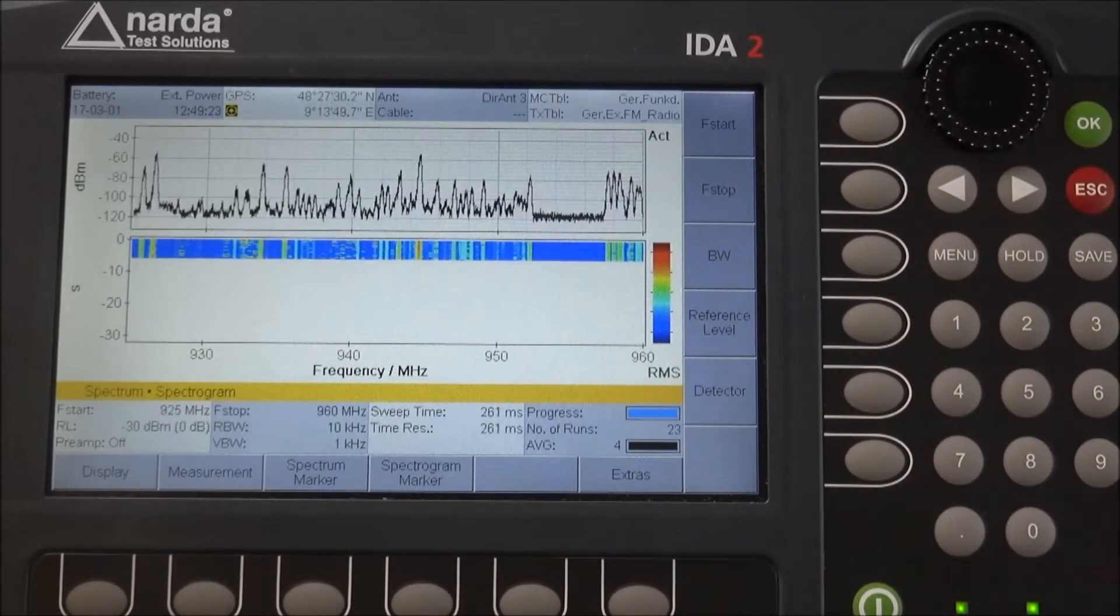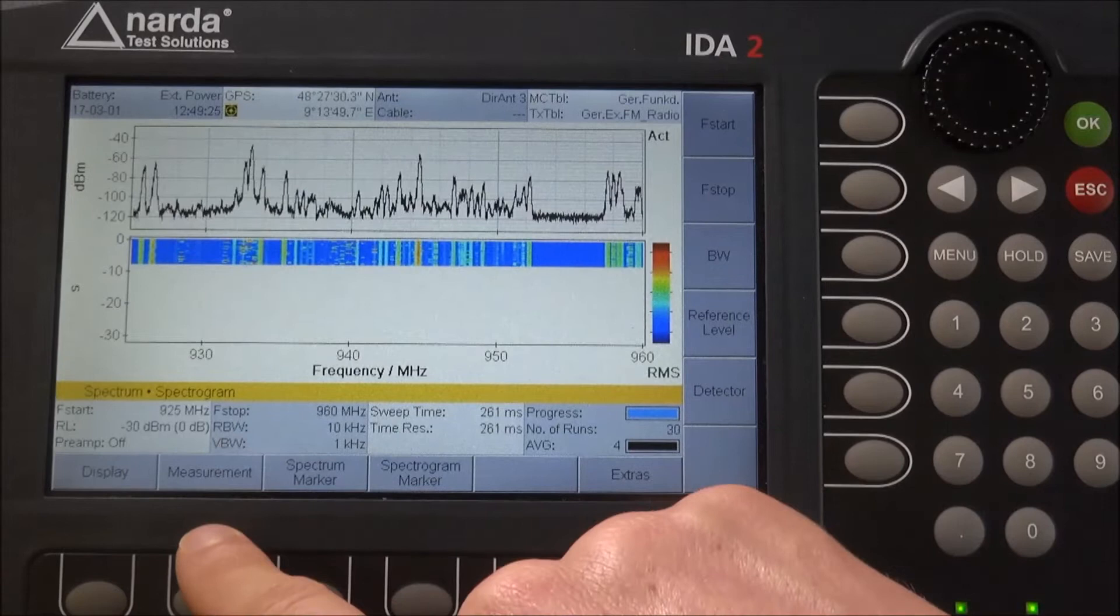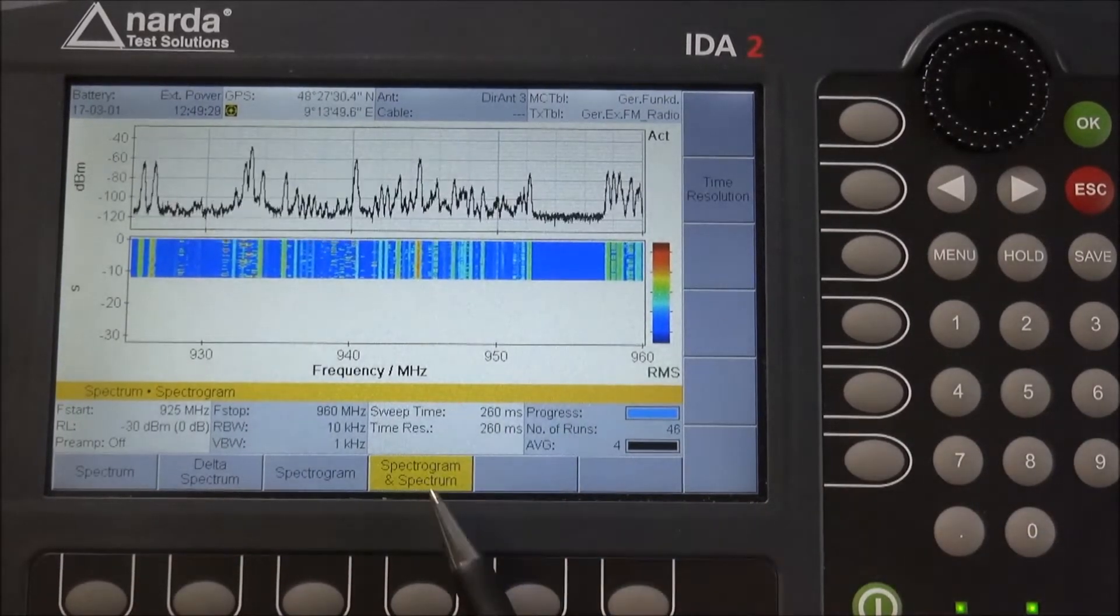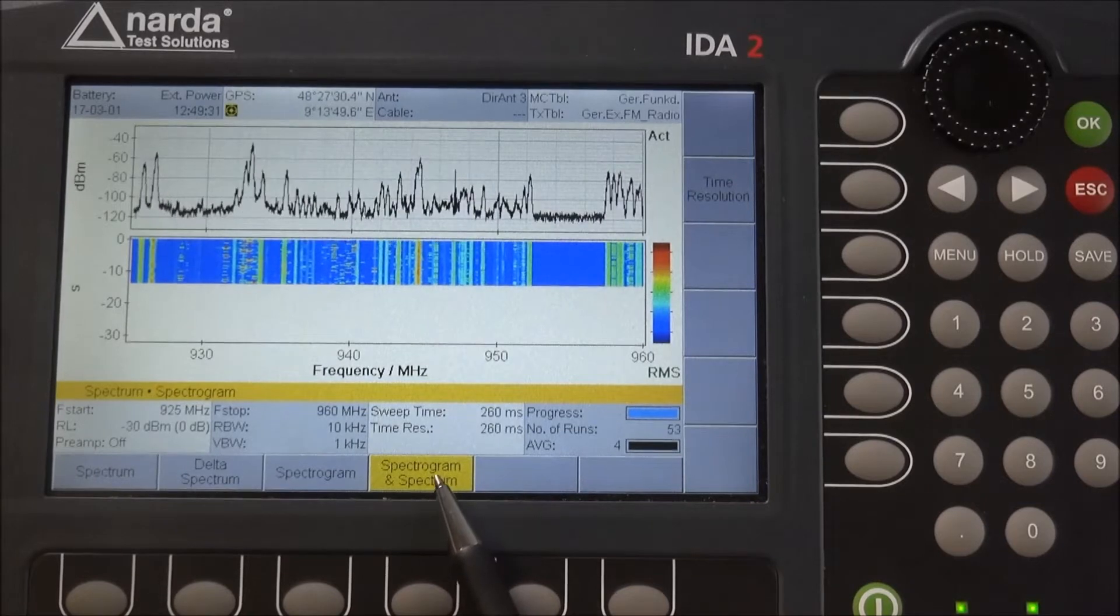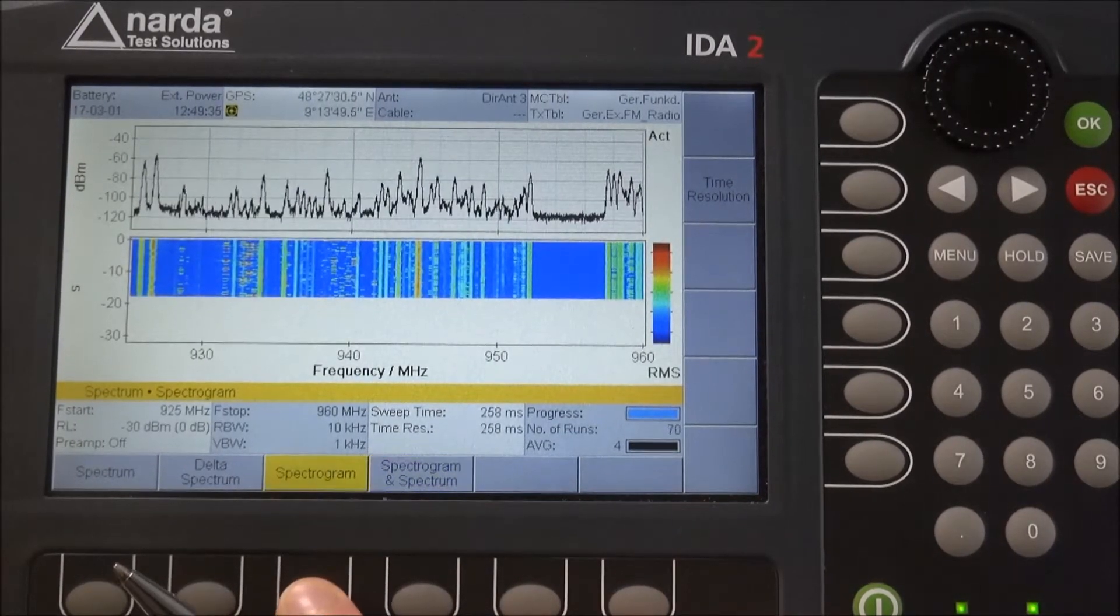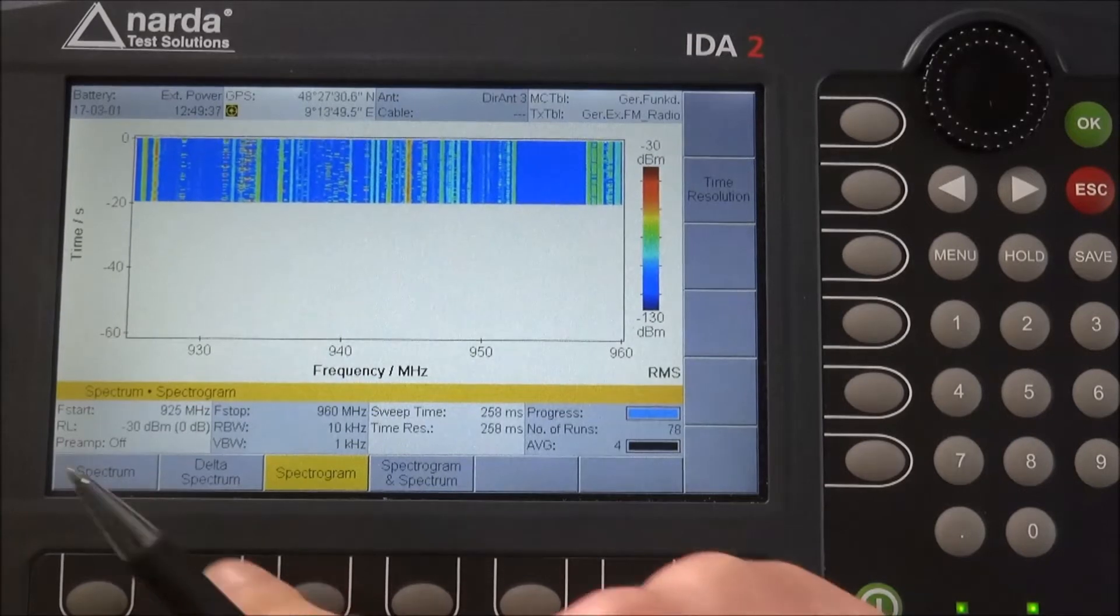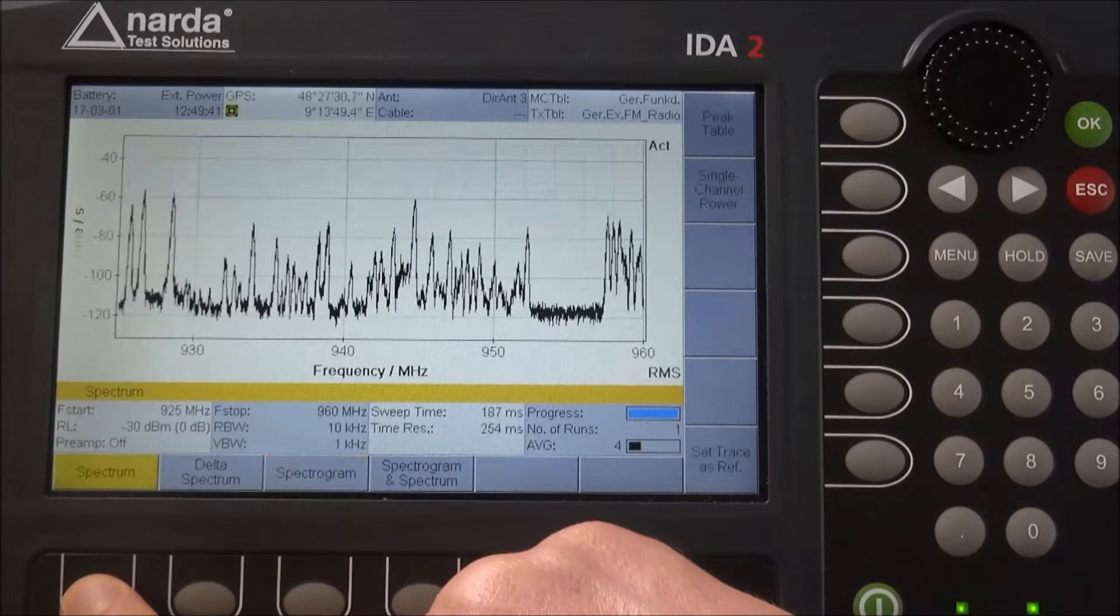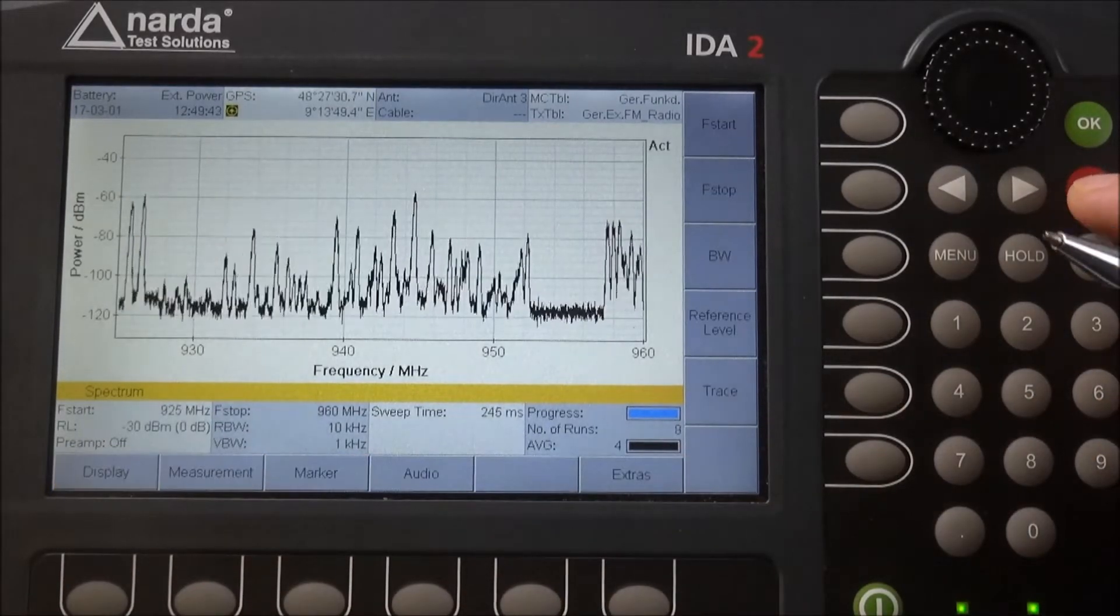You can access those different sub-views by clicking on measurement, and then you'll see that right now spectrum spectrogram is activated. We also provide the spectrogram only, the delta spectrum, and the spectrum.